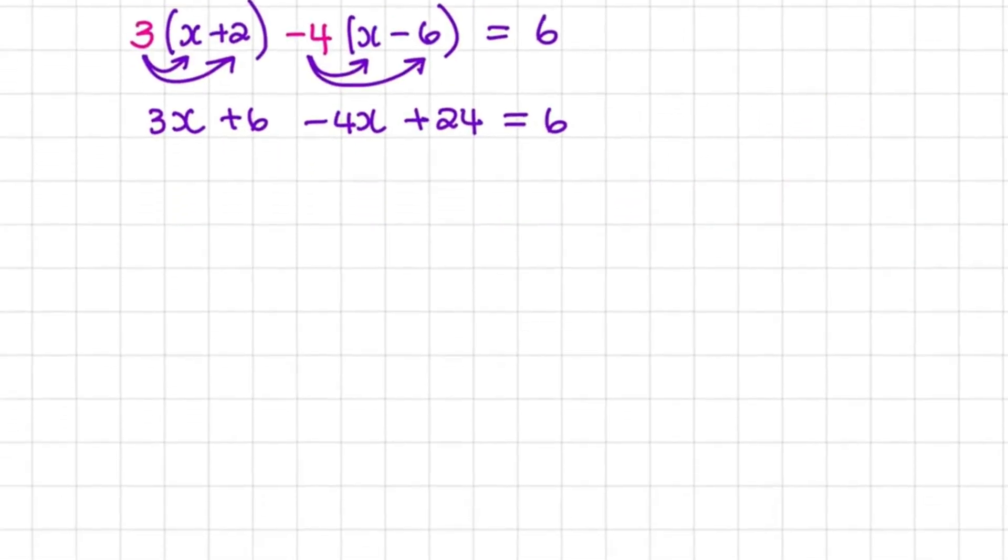Now we can add like terms together. So that is 3x minus 4x equals negative x, and plus 6 plus 24 equals plus 30. And that is equal to 6.